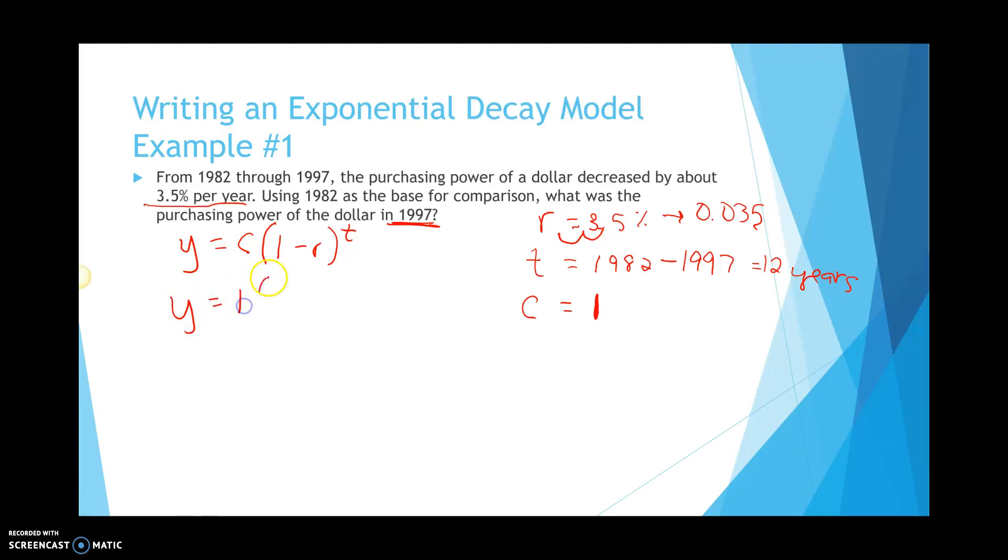We said c was 1, then we take 1 minus my rate. My rate was that 0.035, 3.5% changed into a decimal form. And my t, my time is 12 years. Now, when we're solving, we do need a calculator for this. First, you need to subtract 1 minus 0.035. And when you subtract that, you're going to get 0.965. And that's raised to the t power.